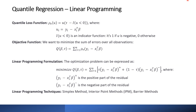In the linear programming formulation for quantile regression, we have the check function with residuals and the indicator function which equals one if the residual u is negative and zero otherwise. The objective function minimizes the sum of weighted errors over all observations. This is expressed as a weighted summation where the positive part of residuals is weighted by tau and the negative part is weighted by 1 minus tau, minimizing with respect to the beta vector. Linear programming techniques used include the simplex method, interior point methods, or barrier methods.